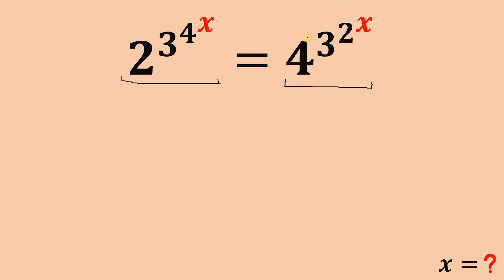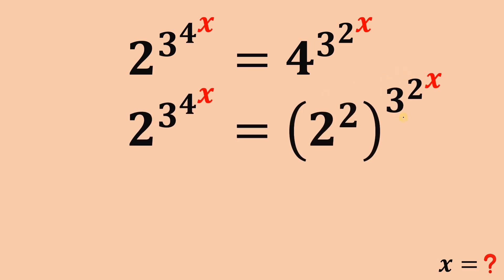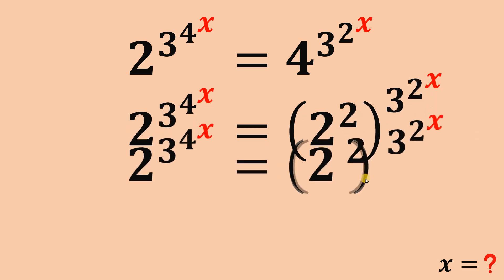Here's the solution. The first concept is we need to replace this 4 in terms of 2 raised to the power of 2, to make the left-hand side and the right-hand side have the same base. So this 4 becomes 2 raised to the power of 2. Next, we will apply the laws of exponents, so we can multiply the exponent of 2, which is 2, and multiply this to 3 raised to the power of 2 raised to the power of x.